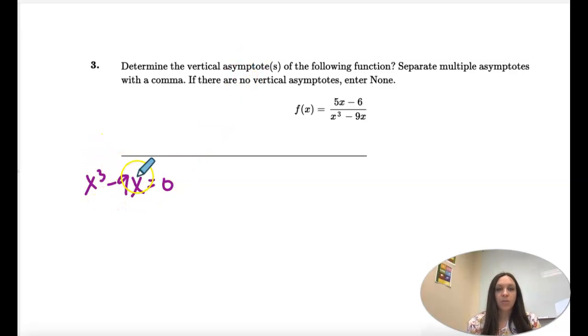So this is a cubic, but there's also an x here. So we're going to take out what's common, and then we're left with x squared minus nine, and then this keeps factoring.